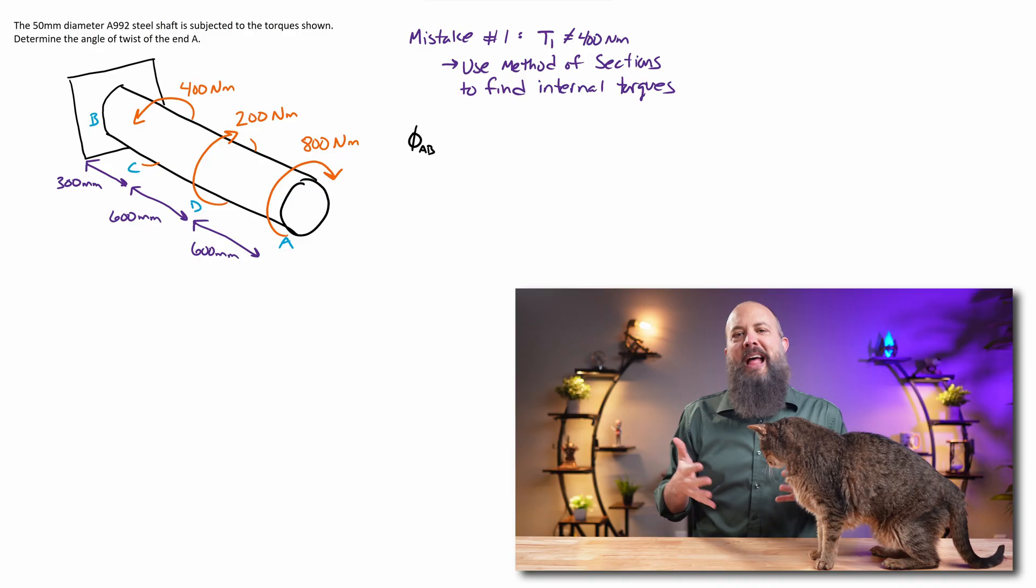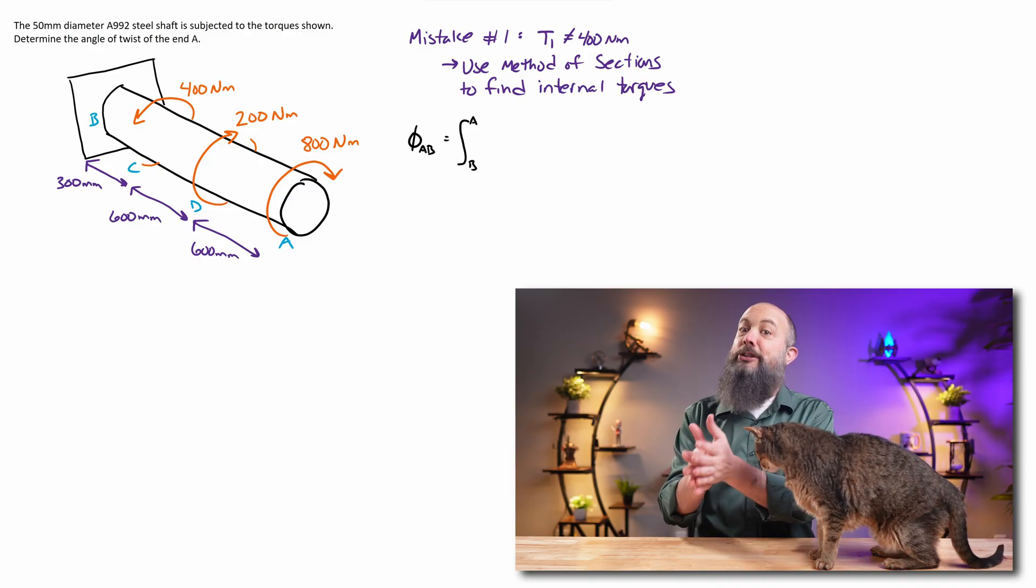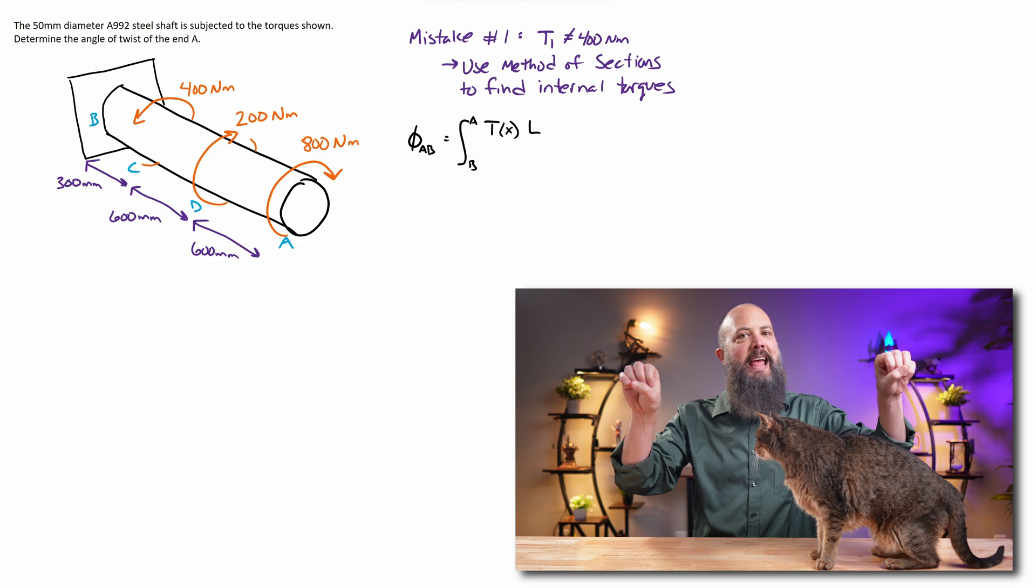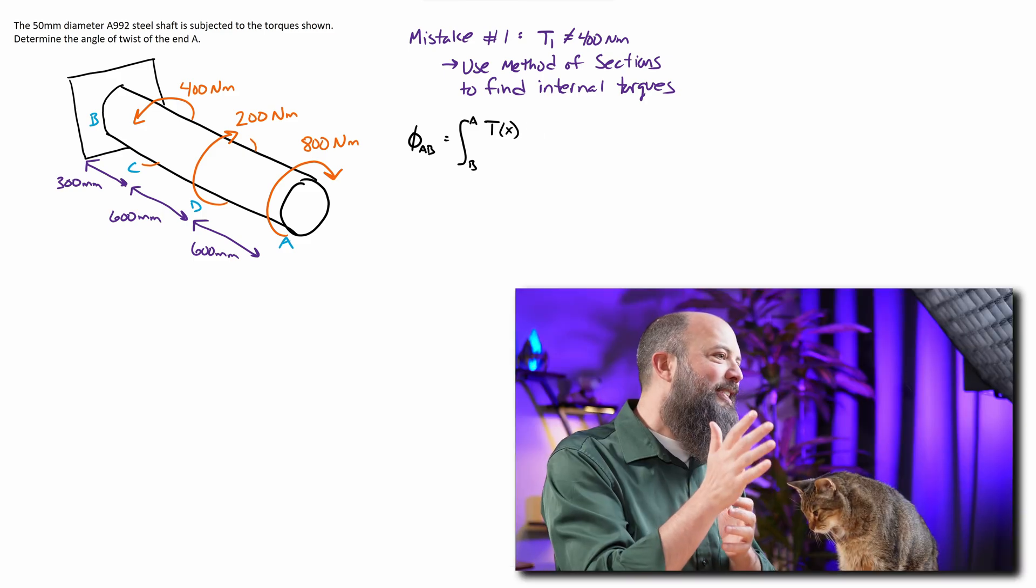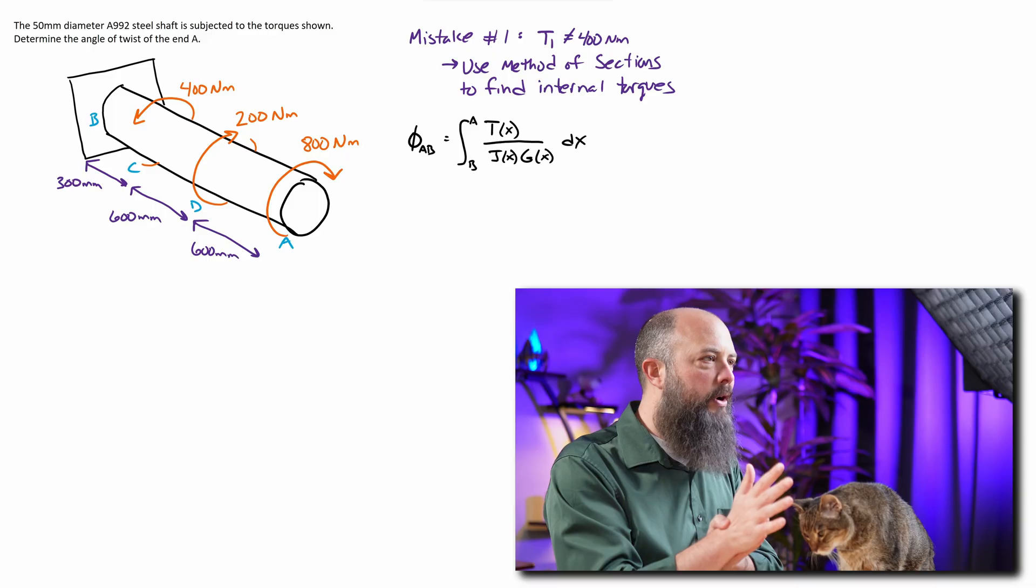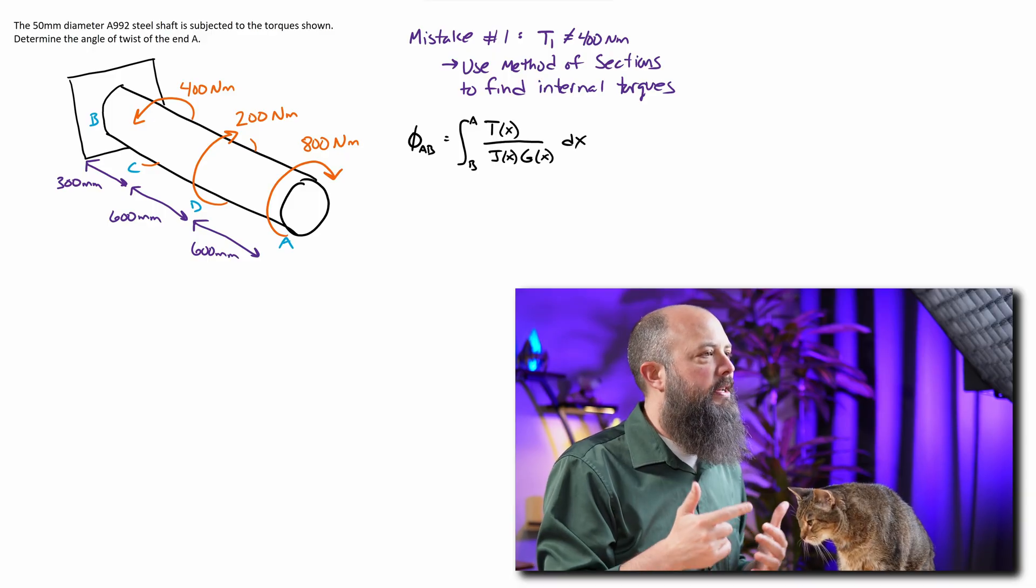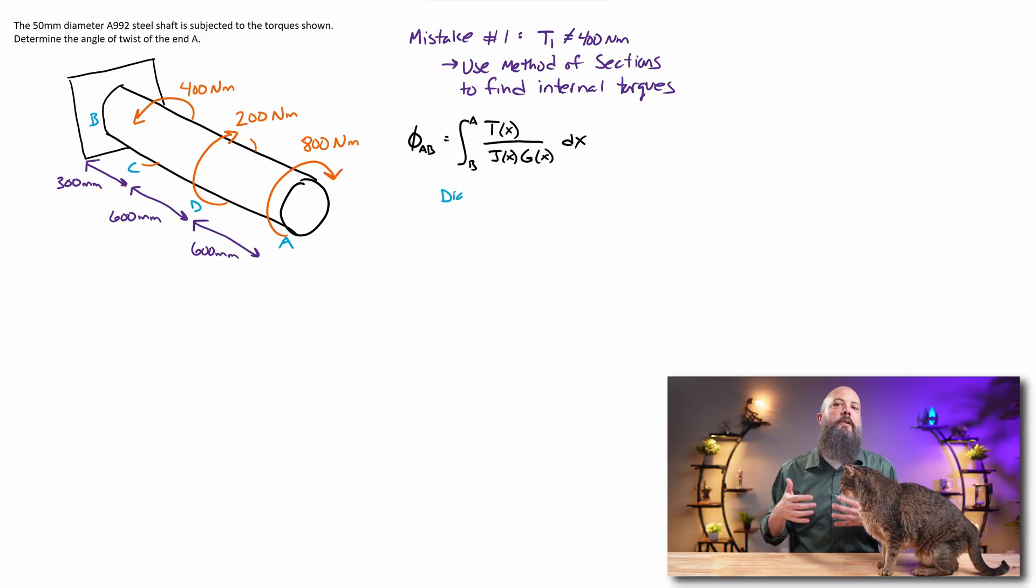The normal angle of twist equation is an integral over the entire length of your shaft, T over JG, where T is the torque, J is polar moment of inertia, and G is the modulus of rigidity.